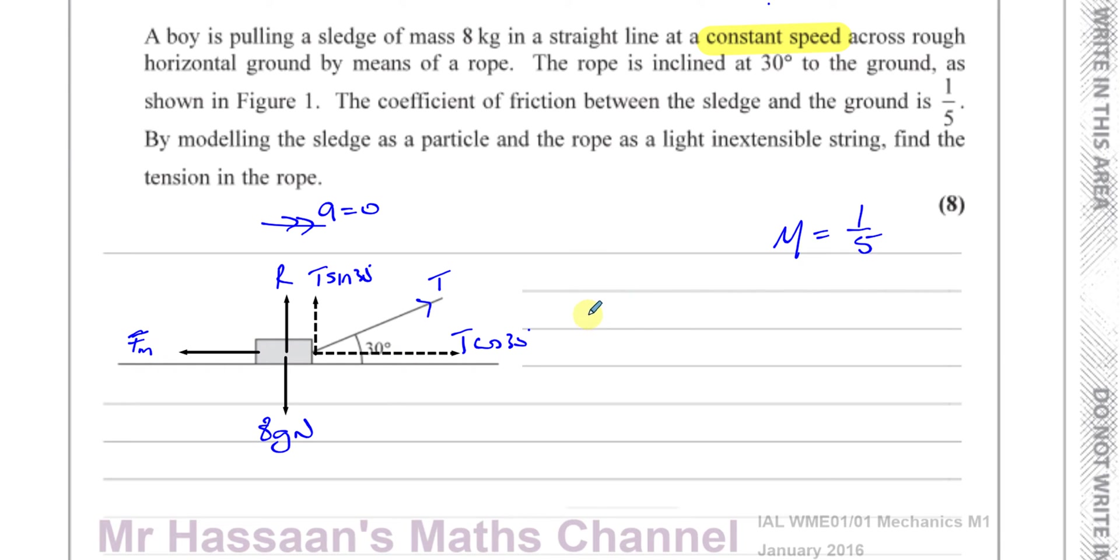So now let's resolve the forces in the vertical direction. If we take up as positive, you have R plus T sine 30, and that's equal to our weight, which is 8G.